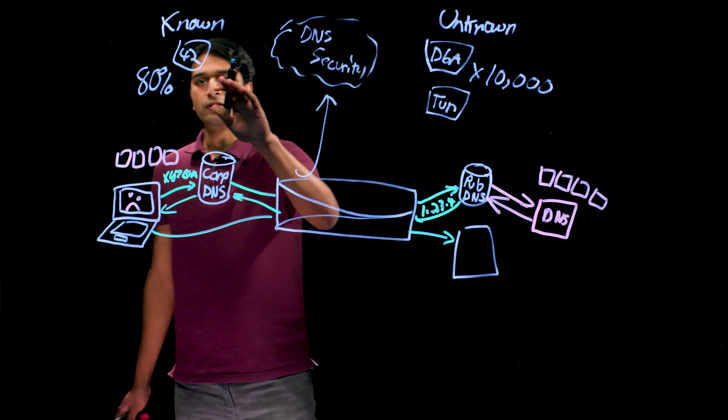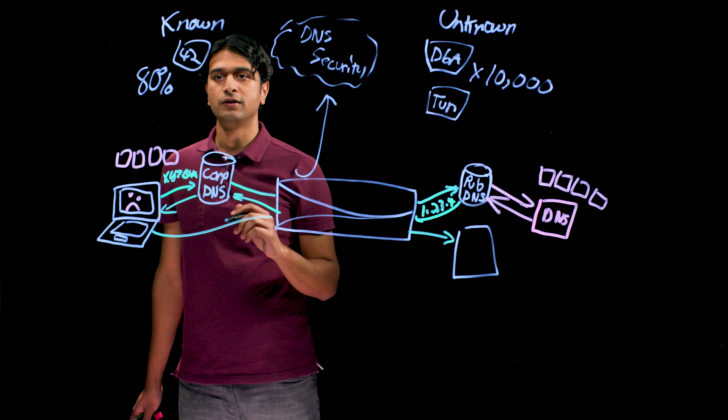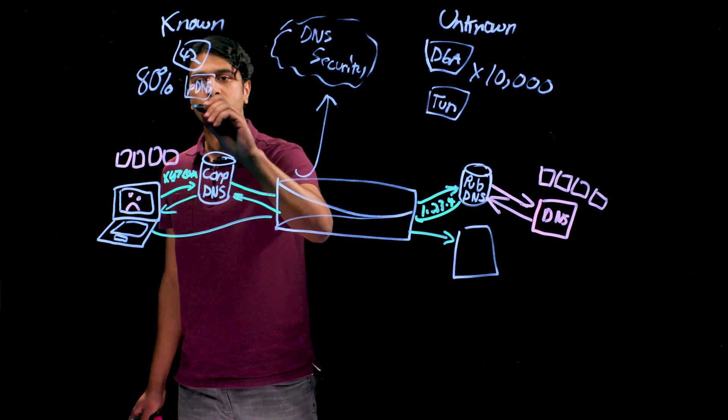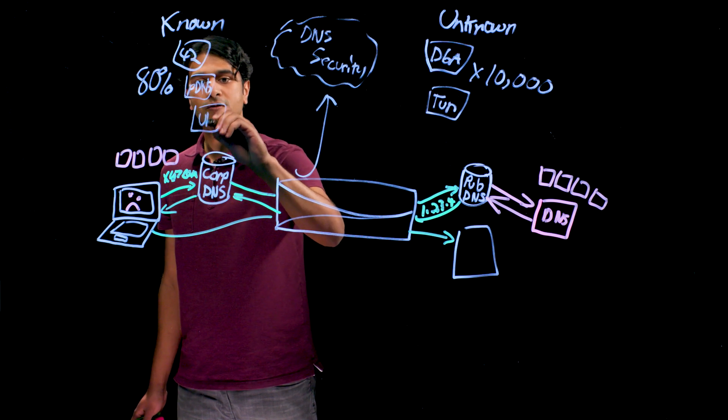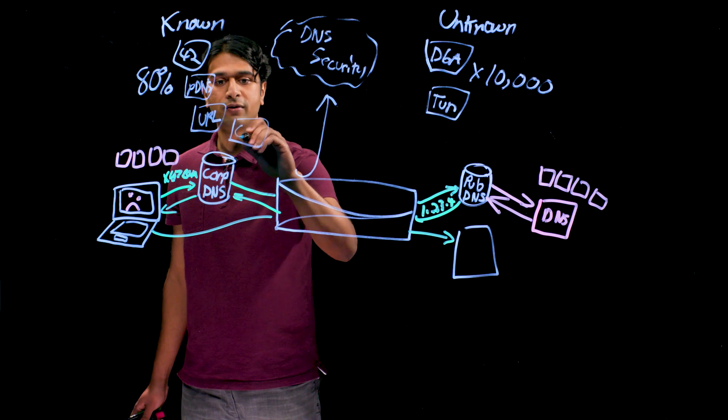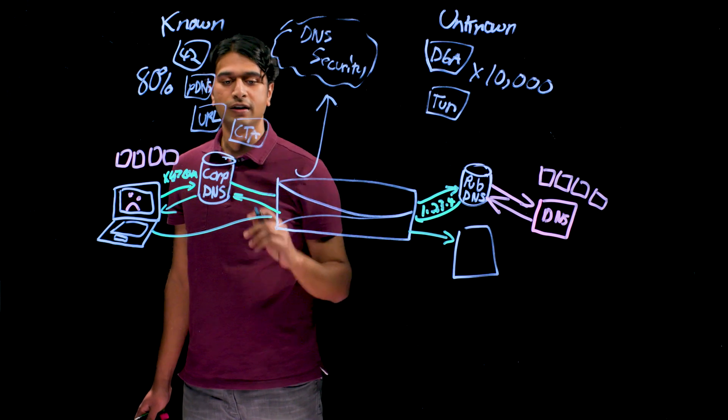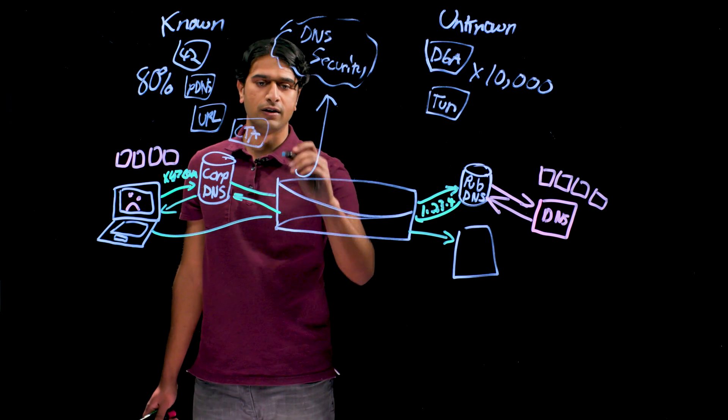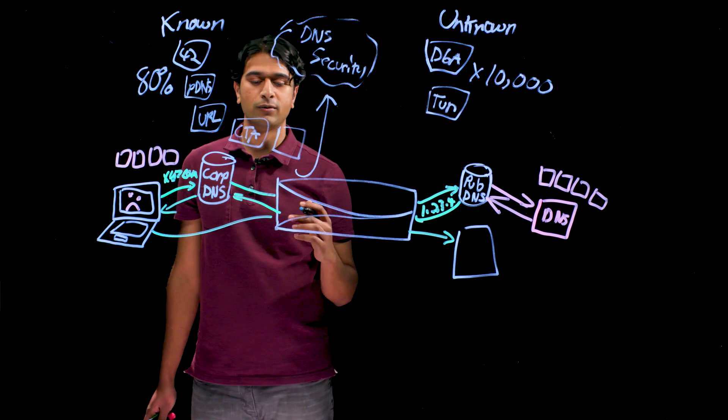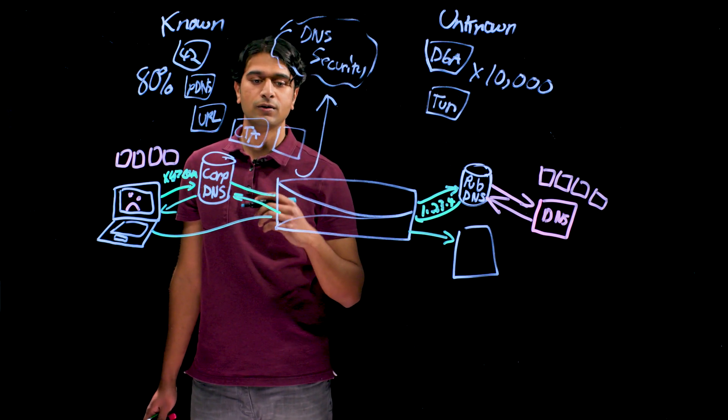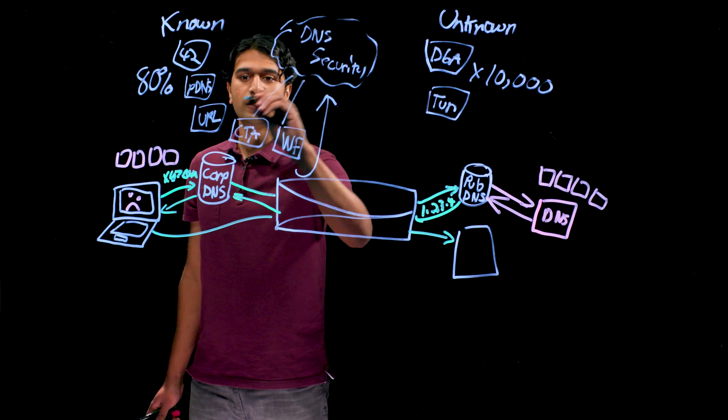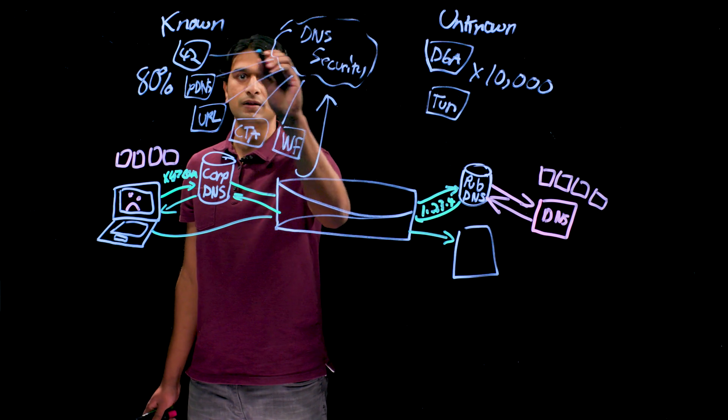For the known threats, we have data from our unit 42 security researchers, from something called passive DNS, from our PNDB URL filtering service, from the Cyber Threat Alliance, which is an industry-wide consortium for sharing of security information, and also for all the millions of samples that run through wildfire each day. We take a look at the network traffic from those sessions and identify malicious domains and put all that data into the DNS security cloud.